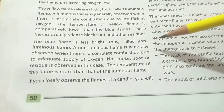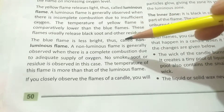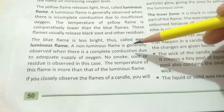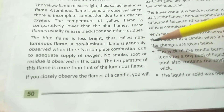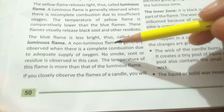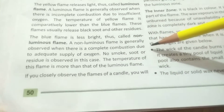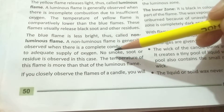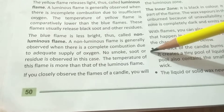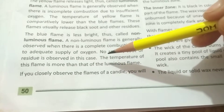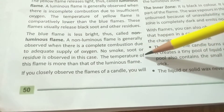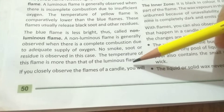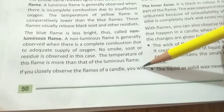The blue flame is not bright, so it is called the non-luminous flame. A non-luminous flame is generally observed when there is complete combustion due to an adequate supply of oxygen. No smoke or residue is observed in this case, and the temperature of this flame is higher than that of the luminous flame.